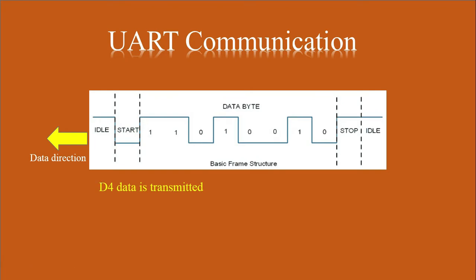In the previous tutorial we have already seen that for doing Serial Communication, that is Asynchronous Communication, data has to be sent in the form of frames. In that frame, the starting bit is known as the start bit, which is represented by a low voltage level, followed by some data bits. The standard data bits are 8 in number, followed by stop bits, which can be 1 or 2.